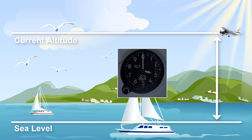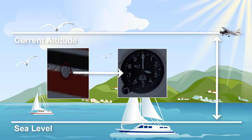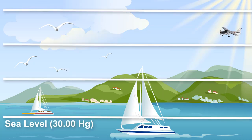Altimeters work by measuring the difference between sea level pressure and the pressure at the current altitude one is flying at. This measurement of the weight of the air comes in via the static line. For every 1,000 feet gained in altitude from sea level, there is a 1 inch drop of mercury.